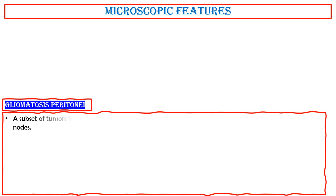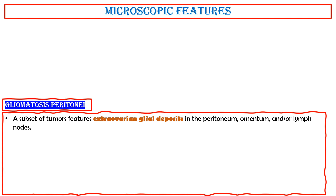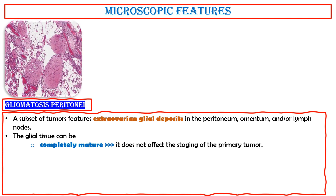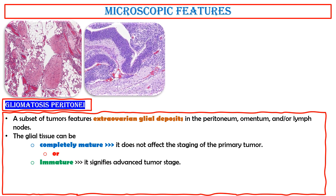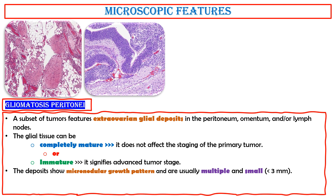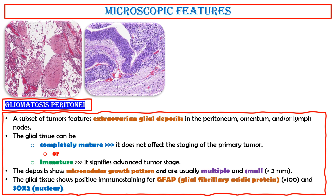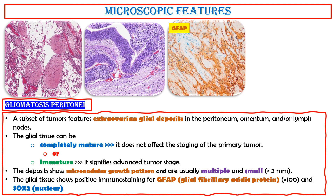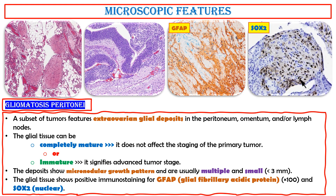Gliomatosis peritoneae. A subset of tumors features extra-ovarian glial deposits in the peritoneum, omentum, and lymph nodes. The glial tissue can be completely mature; however, it does not affect the staging of the primary tumor, or it can be immature, in which case it signifies advanced tumor stage. The deposits show a micronodular growth pattern and are usually multiple and small, less than 3 mm. The glial tissue shows positive immunostaining for GFAP — glial fibrillary acidic protein — and SOX2 nuclear positivity.